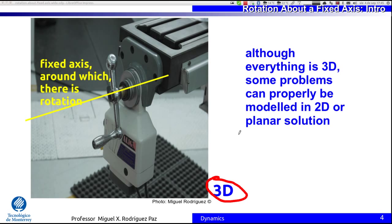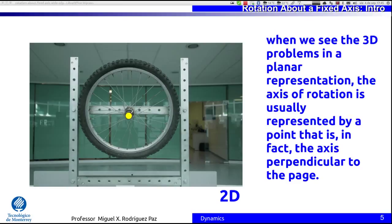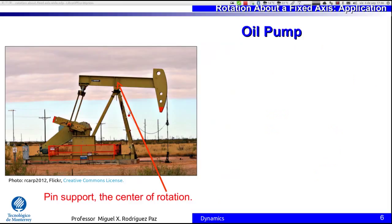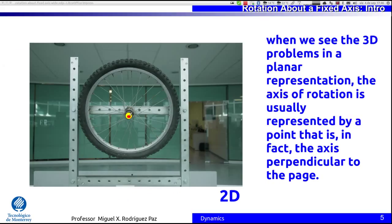Look at this bicycle wheel. It is located on a frame in the lab, and this is the center of rotation. When we have a 3D object located on a plane, as in the case of this bicycle wheel, the axis of rotation is seen as a dot — as a point — because the axis is leaving the screen towards us, perpendicular to the plane, to the page, or to the board. So it is valid to represent a 3D problem as 2D when solving in the plane. When we evaluate the properties of this rigid body — like the mass moment of inertia with respect to this axis — we will take into account that it is a 3D object.